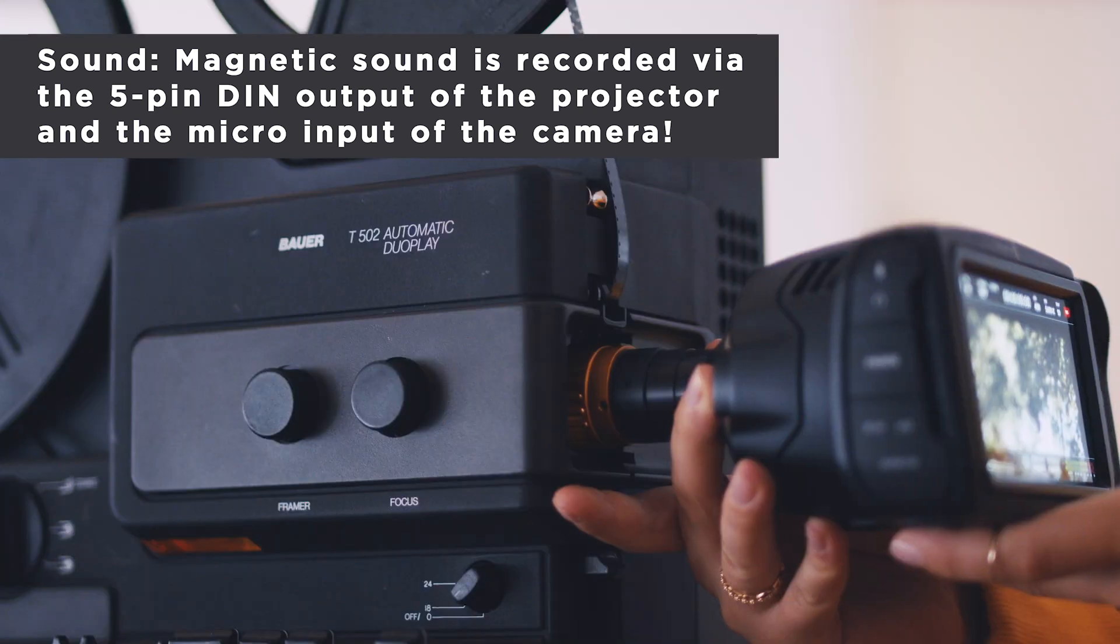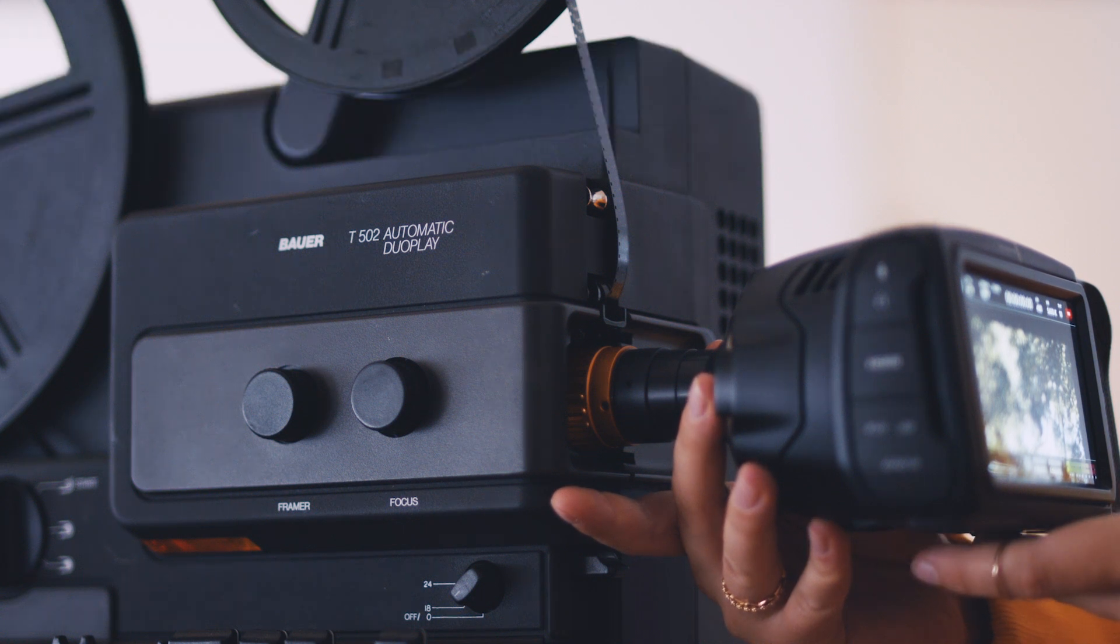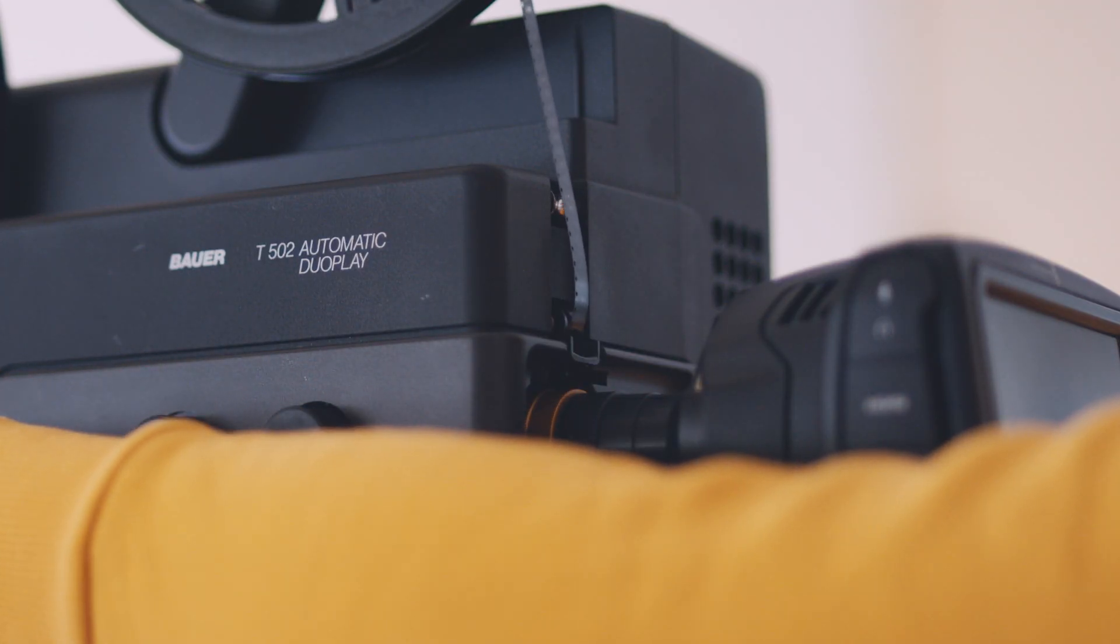The image can be easily aligned vertically or horizontally with the help of the soft rings on the lens. Once the projector is started, the image is already being recorded.